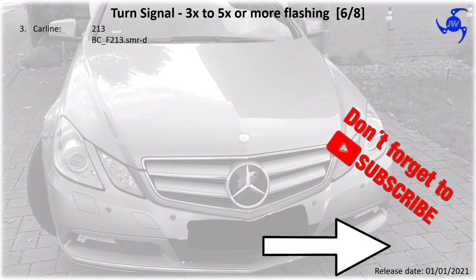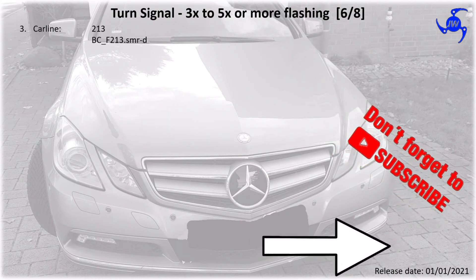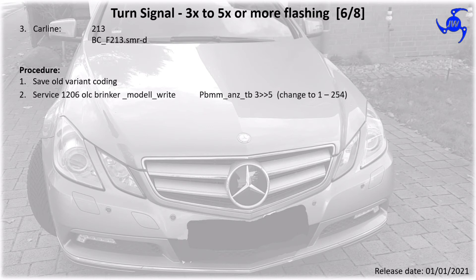This time it's for the car line 213. You need to use the SMRD function of Vediamo, and if it's not working you need to use MUNA. The procedure says: again save all variant coding, then go to SELDAS 1206, find 'blinker model right', and change the TBMM ANS TB value to whatever you want between 1 and 254.